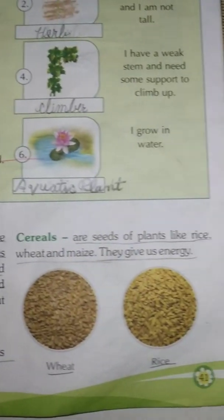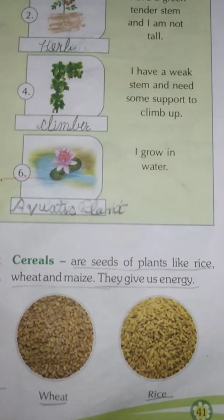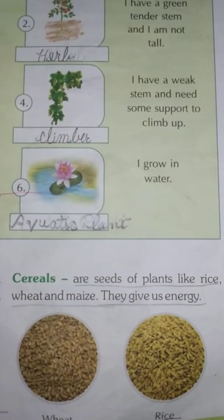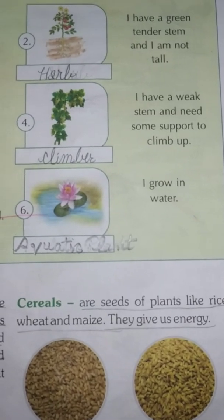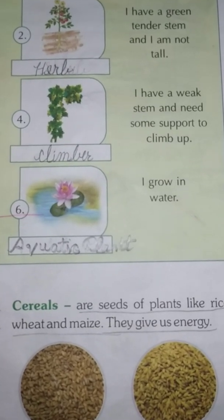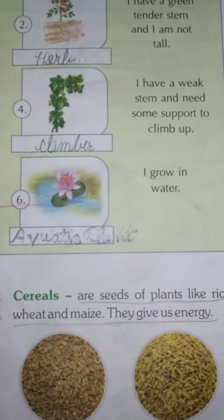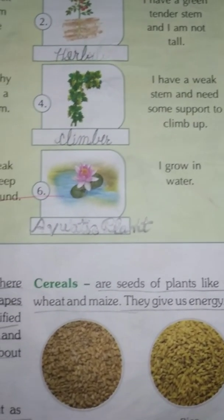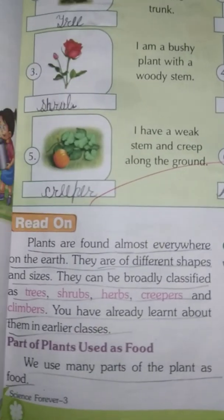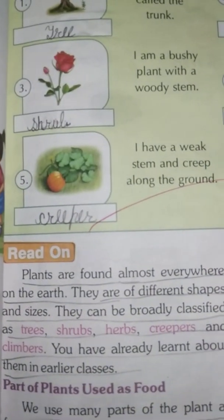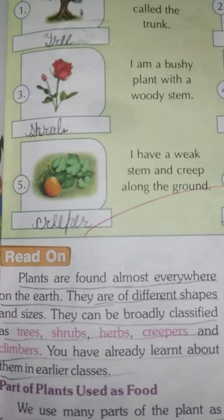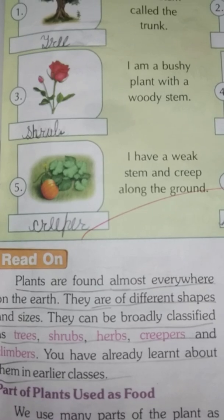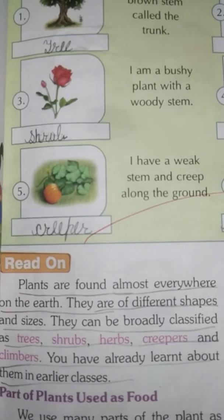Number 4: I have a weak stem and need some support to climb up. The answer is: Climber. Number 5: I have a weak stem and creep along the ground. The answer is: Creeper.